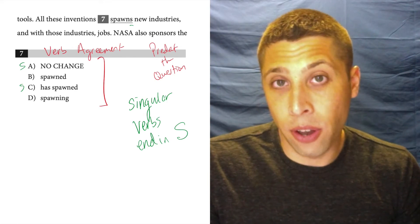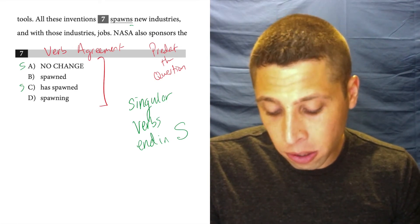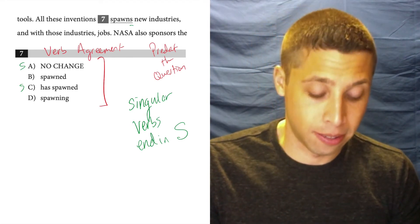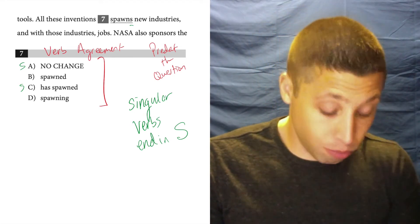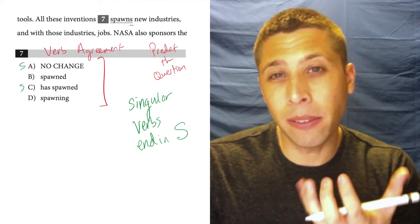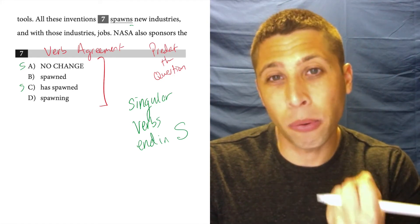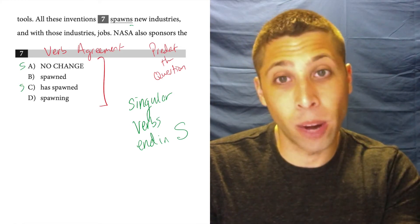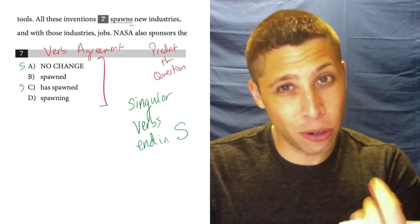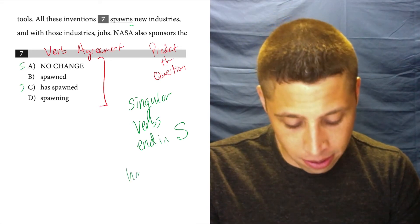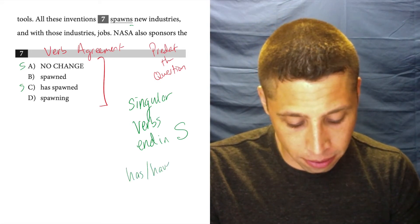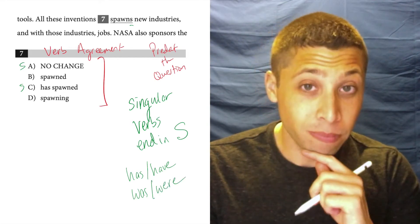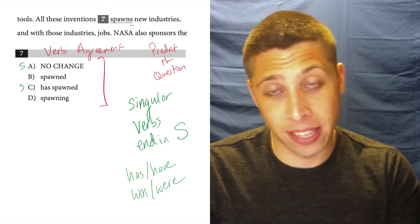Well in this case, no. Both spawned and spawning are different tenses. And this singular plural thing only really exists in English in the present tense. Words that are things that are happening right now with the two exceptions of has and have and was and were. Again, they follow the rule. S ends in S means singular.